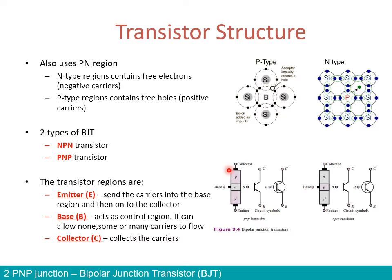The terminals are called by specific names. The names of the terminals are: one is what we call the emitter, the one in the middle is what we call the base terminal, and the other terminal is what we call the collector terminal. For example, in a PNP transistor, we have the N region as the base, and both P regions serve as collector and emitter. Here are the circuit symbols — we will explain in the next slides why we have this kind of circuit symbol and what these arrows mean.